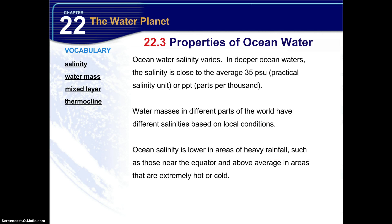Ocean water salinity varies. In deeper ocean waters, salinity is close to an average of 35 PSU — Practical Salinity Units, or parts per thousand. Water masses in different parts of the world have different salinities based on local conditions. Ocean salinity is lower in areas of heavy rainfall, such as those near the equator, and above average in areas that are extremely hot or cold.